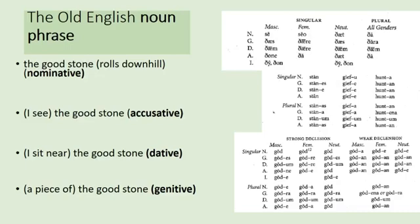The first thing we're going to talk about, because it's the thing that's most distinct from modern English, is the Old English noun phrase. A noun of course is a person, place, thing, or concept — it points to things in the world. It comes from an Old French word meaning 'name.' In modern English, nouns do not have cases. In Old English they did — different endings depending on the role the noun is playing in the sentence.